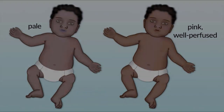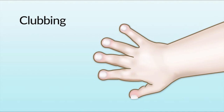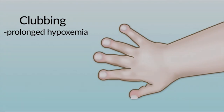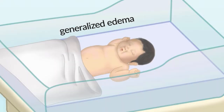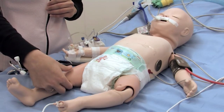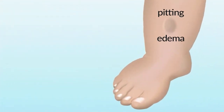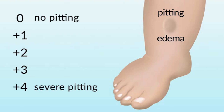Next, you'll want to look to see if the patient has the presence of something called clubbing. This is often caused by prolonged long-term hypoxemia or low oxygen levels in the blood, and is typically seen in children with congenital heart defects. Next you'll want to look for edema or swelling. Edema can be either generalized — meaning that the patient as a whole looks puffy and fluid overloaded — or more localized to a certain region such as their lower extremities. Lower extremity edema is often associated with congestive heart failure. It's also important to note whether the edema is pitting, in which if you pushed on the edema you would see an indentation that may remain for some time. This can be graded on a scale of 0 to +4.